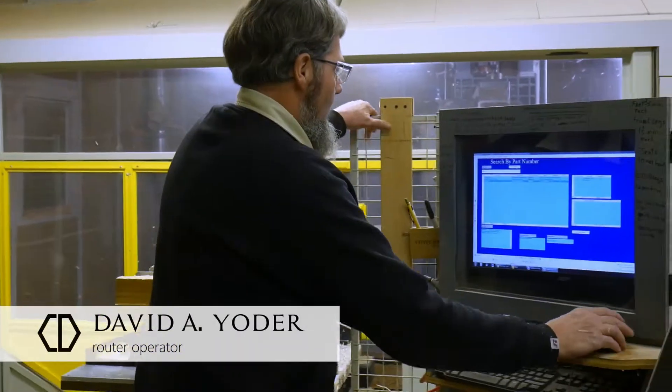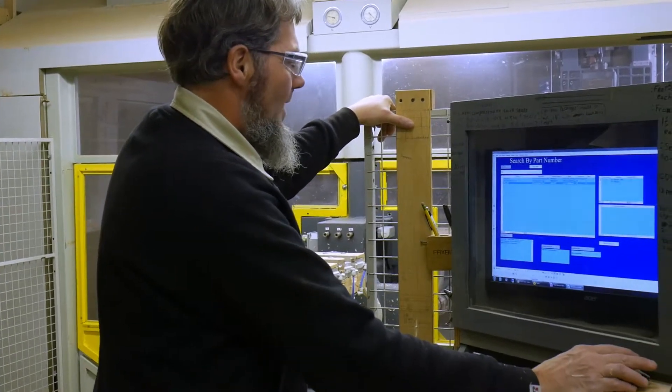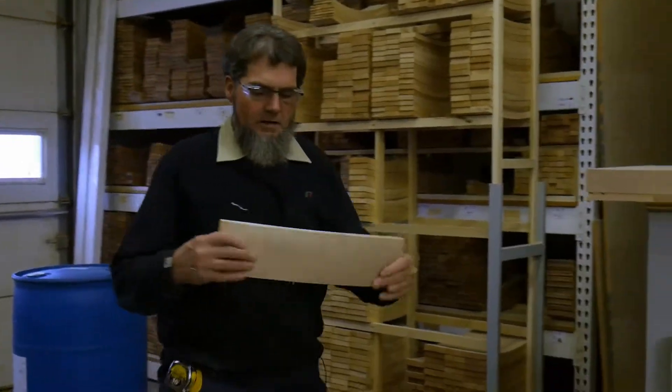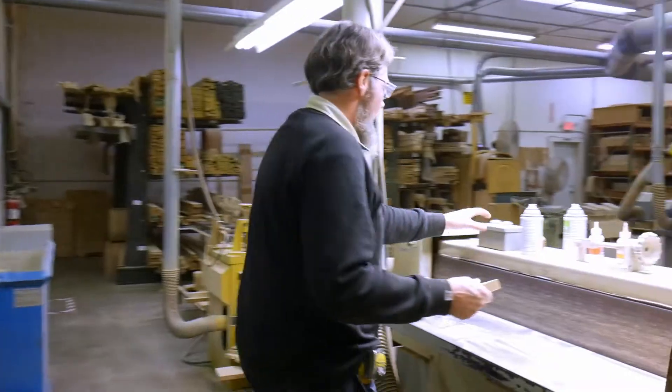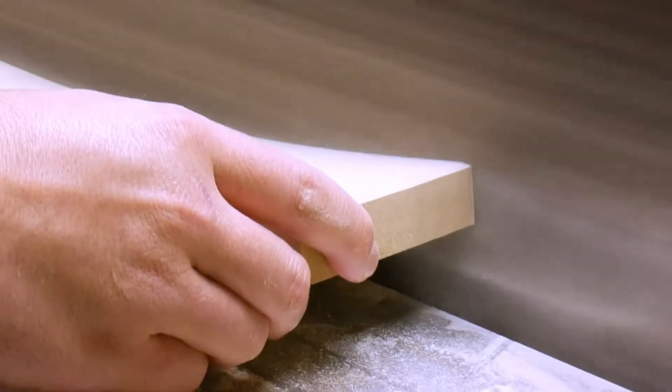All right, what I do here, I want to make a number 318 backbend, get the raw part, get it off of here, sand the bottom edge, then it's ready for the router.